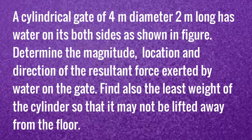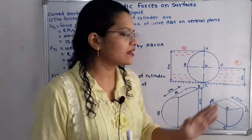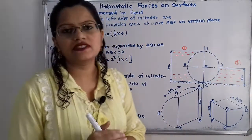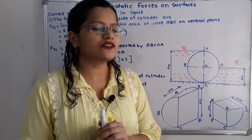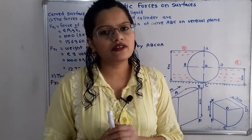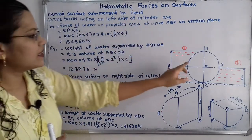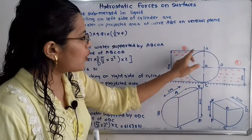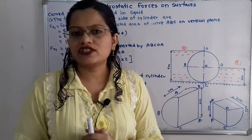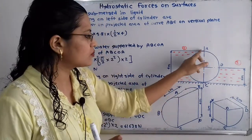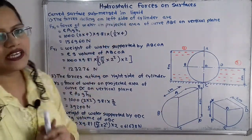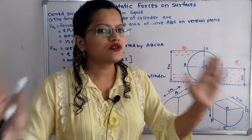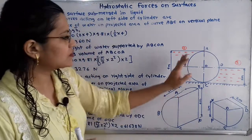We have to first find out what forces are acting on the left hand side of the cylindrical gate, then calculate the forces acting on the right hand side, and then find the resultant force applied on this cylinder. We will use suffix 1 for the left hand side and suffix 2 for the right hand side, because we have split the gate into two parts — the water level is different on each side.